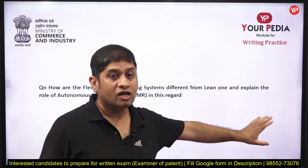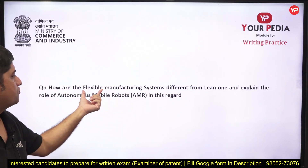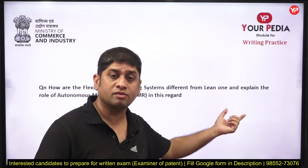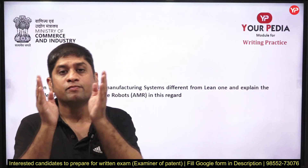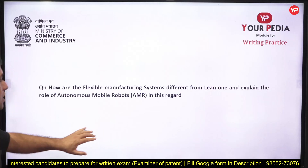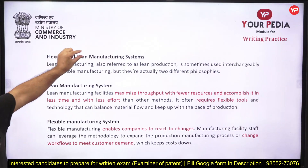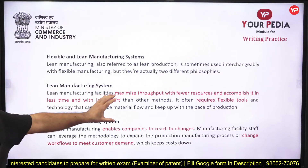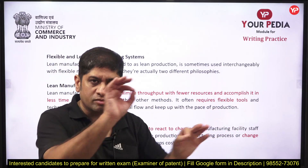For the question on how flexible manufacturing differs from lean, divide it into three parts: first define flexible manufacturing system, then define lean manufacturing system, then explain how flexible differs from lean, and finally define the role of AMR — Autonomous Mobile Robot. The format is: heading, small explanation, heading, small explanation, heading, small explanation. Whatever is written in red is what you must underline.